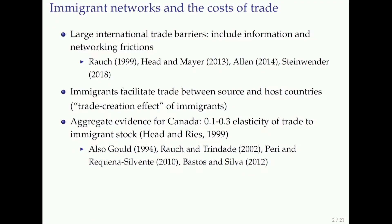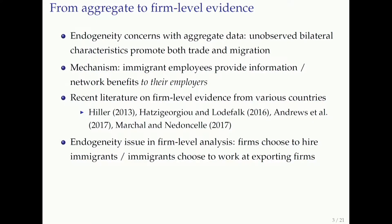There's a lot of aggregate evidence. For example, how much does Portuguese immigration to Canada increase Canadian exports to Portugal? Head and Rice have a paper in 1999 that looks at Canadian data and found that at the aggregate level the elasticity of trade with respect to national immigrant stocks is about 0.1 to 0.3. Gould does something similar from the US; Perry and Requena-Silvente did something similar for Spain; and Bastos and Silva, and Rauch and Trinidad, did something similar looking from the perspective of Portuguese and Chinese immigrants and where they go throughout the world.